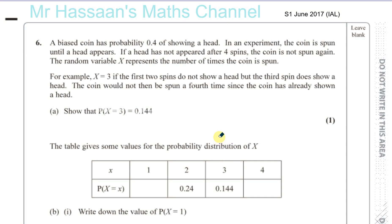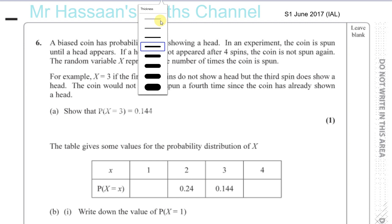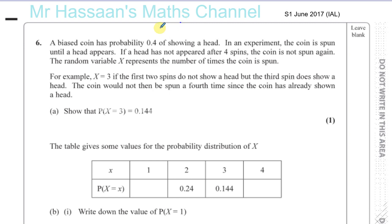Now for question number 6 from S1 Statistics 1, June 2017 International A-Level Paper. Our question here is about discrete random variables, which a lot of students seem to be afraid of, but it's nothing to be afraid of really. Over here we have a question which describes an experiment.